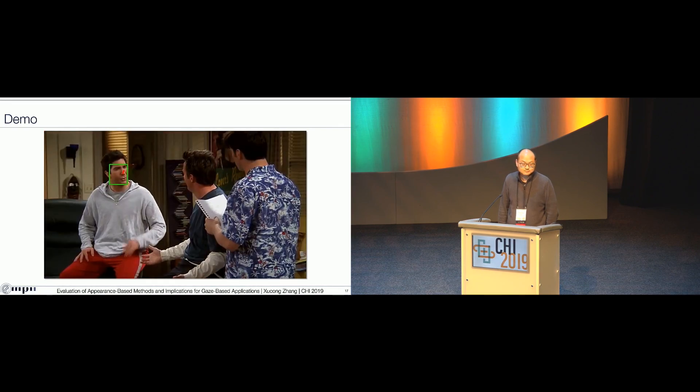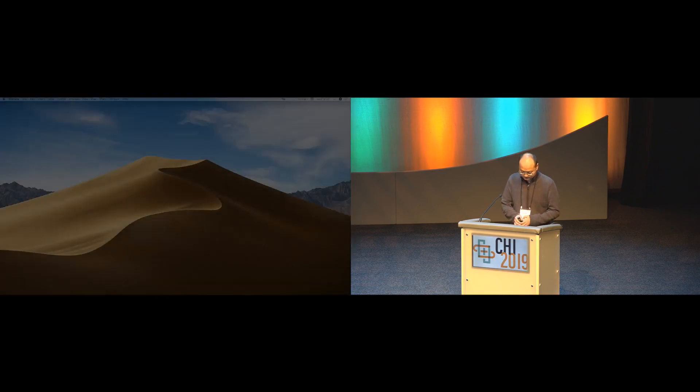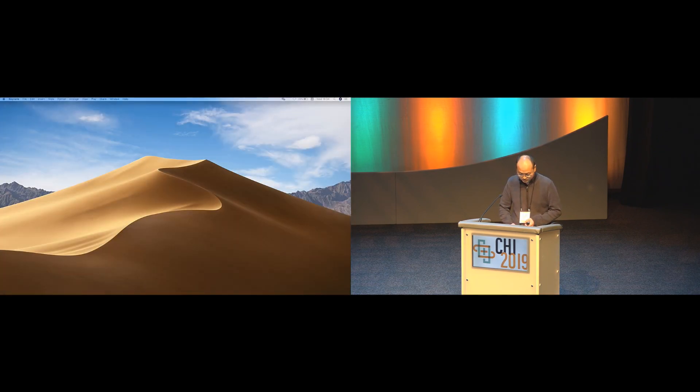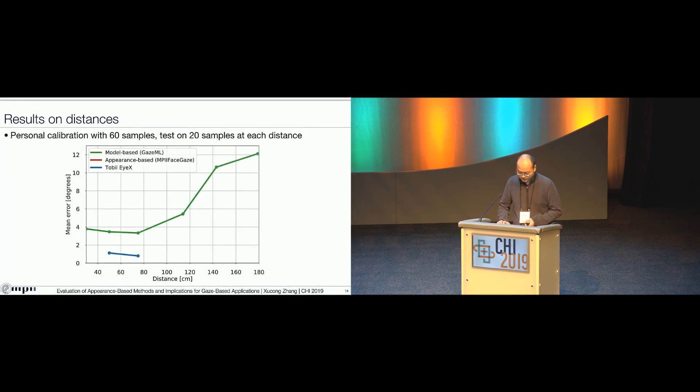I had a technical question. On slide 14, I noticed something with the appearance-based method. It looks like the error is actually going down after one meter. Do you have any insights on that? Yes. Please note that for this experiment, we use 60 samples for calibration at each distance. That means for each distance, they have one model. So we train on that distance, test on that distance. Another thing is if the user is very far away from the display, then the gaze range also shrinks. So the total range is smaller, so that the error cannot be that large.